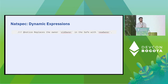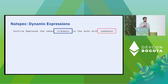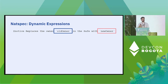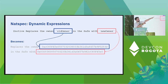A nice thing about NatSpec is it has a specification for dynamic expressions. The old owner and new owner parameters shown in backticks can actually be filled dynamically with the value they are being called with — the address gets filled in for the owner, and the new owner can also be filled in from the parameters.